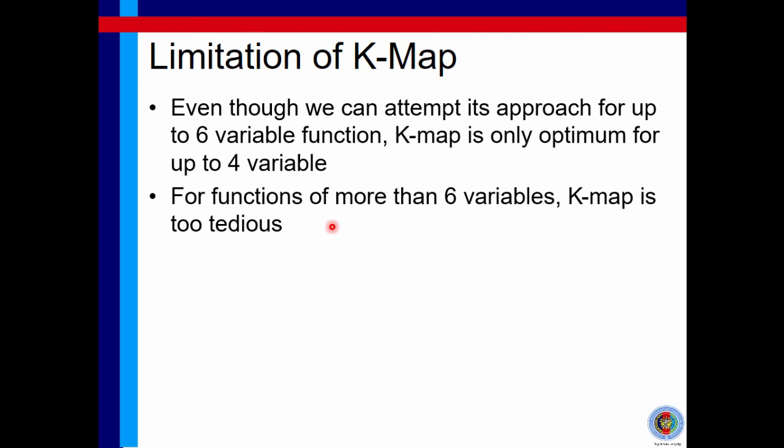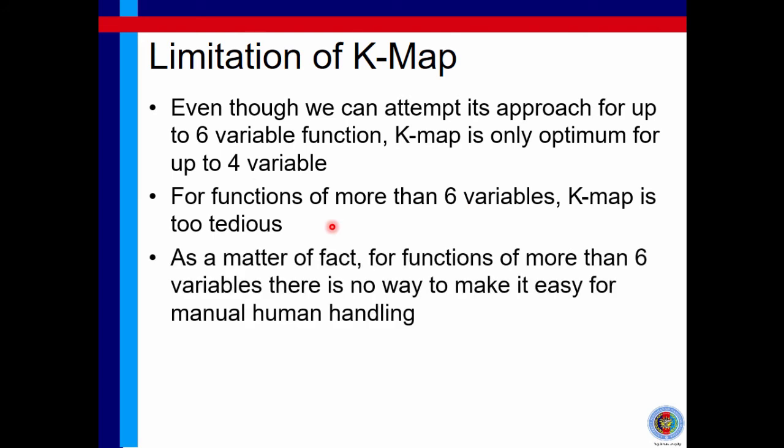For functions of more than six variables, KMAP is too tedious. So you already know that for four variables, you need a KMAP of four by four. And you already know that with six variables, you need four four-by-four KMAPs.